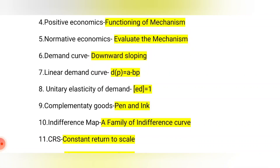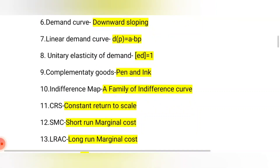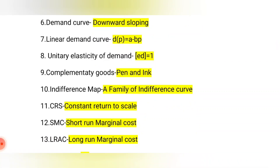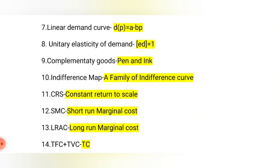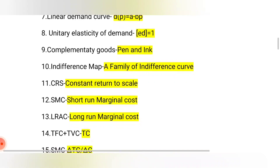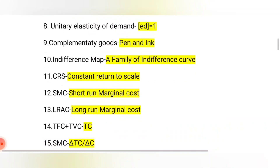Normative economics discusses norms — evaluating what ought to be and what should be. Demand curve is downward sloping. Linear demand curve formula is: D (demand at price) = a − bP. Unitary elasticity of demand is where elasticity equals one. Complementary goods are like pen and ink, bread and jam, or shoe and socks.